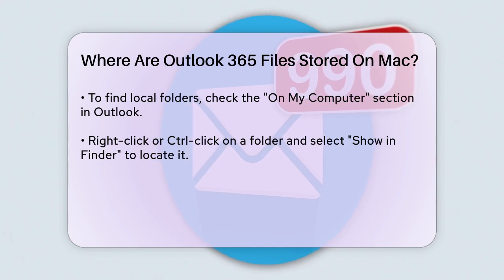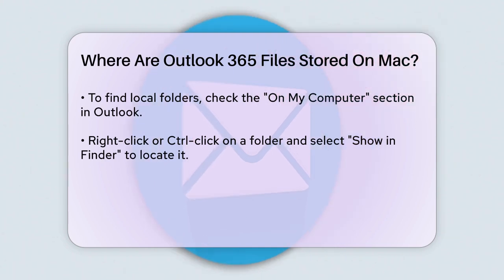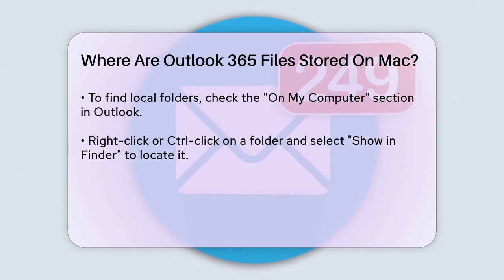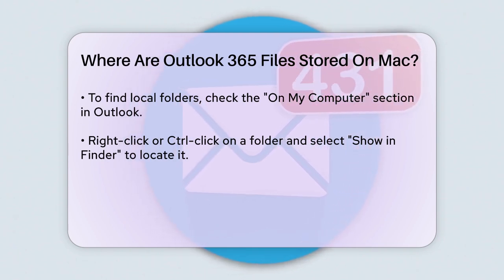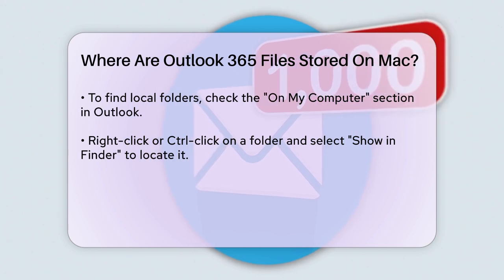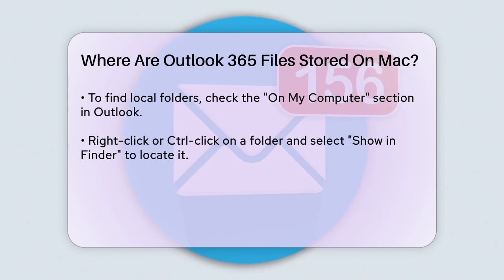For example, if you need to transfer these local folders to another computer or back them up, knowing this location is key. The files are typically stored within the /library/group containers directory, which can be a bit tricky to find without using the Show in Finder option.